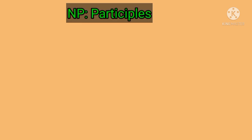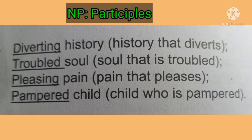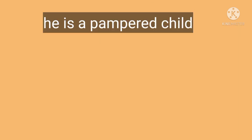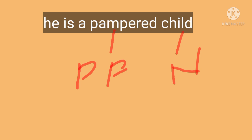Participles also function as pre-modifiers in a noun phrase. There are two types: present participles and past participles. When used in a noun phrase, they function as adjectives, not verbs. Examples: 'diverting history' means history that diverts; 'troubled soul' means soul that is troubled; 'pleasing pain' means pain that pleases; 'pampered child' means child who is pampered. In 'he is a pampered child,' pampered is the past participle that modifies the noun child, functioning as an adjective.